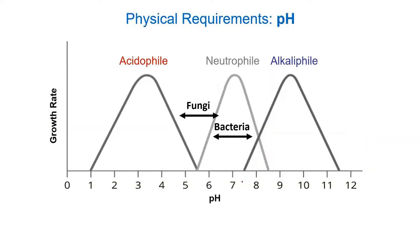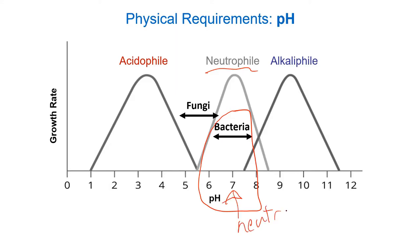Moving from temperature to pH: many organisms love the neutral range, and the word for this is neutrophile. Most bacteria grow in a pH range of about 6 to 8. Some fungi prefer a slightly more acidic pH. There is one bacterium in particular that is an acidophile — one that thrives in an acidic environment.